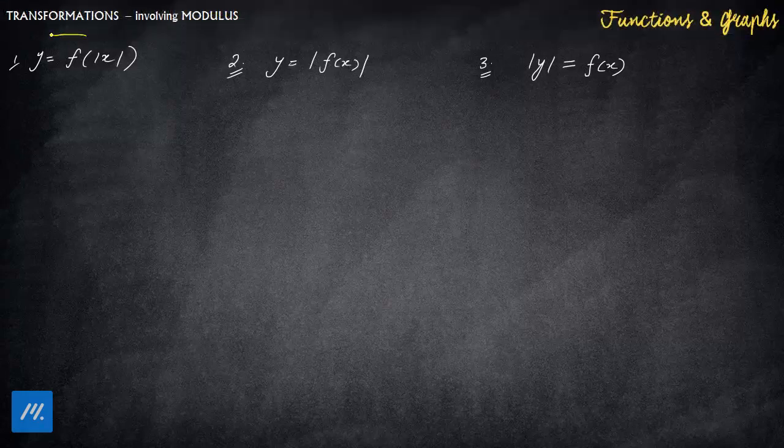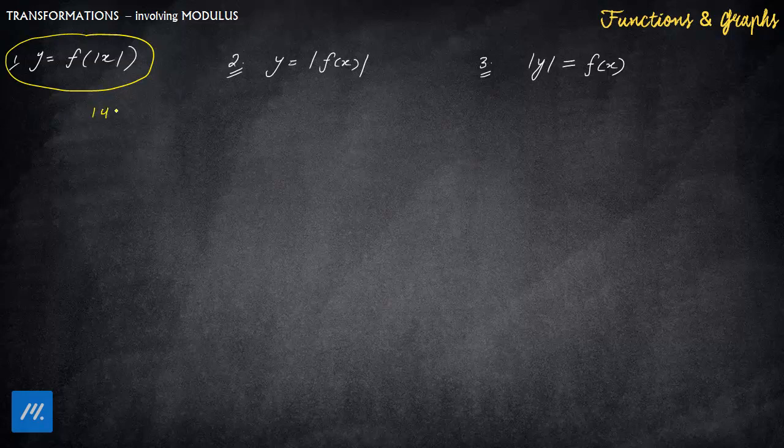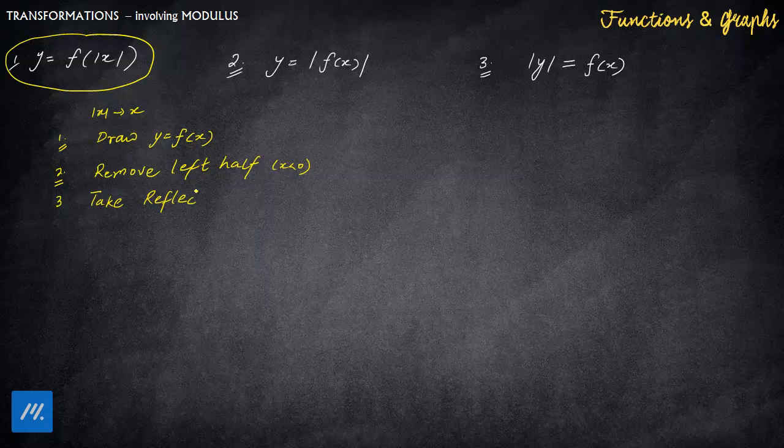We are going to start with when you have a modulus on the independent variable. So what happens here? Let's say |x| goes to x. So what we have to do is: first, draw y = f(x) as if mod is not there. Then understand that |x| means the input will never be negative. So you will remove the left half, that is x less than zero. Take reflection of right in left. This is what you have to do. I will explain with the help of an example.